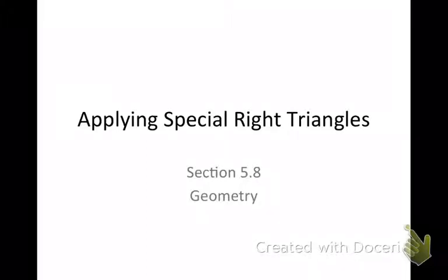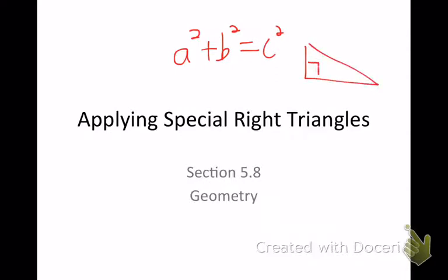Applying special right triangles, section 5.8 today. What was 5.7 about? Pythagorean Theorem — A squared plus B squared equals C squared. That works for right triangles where you know A, B, and C. Today we're going to talk about some special unique qualities about some right triangles as well.